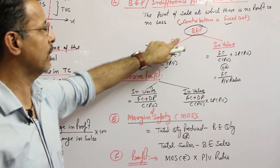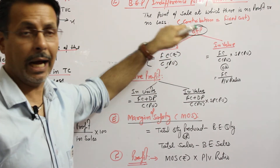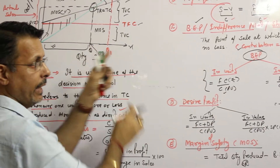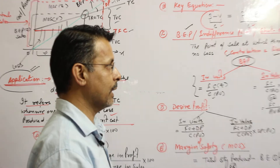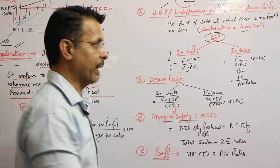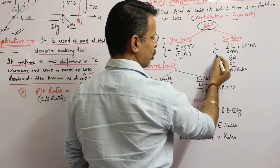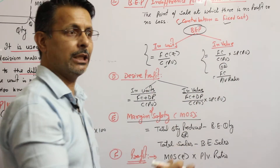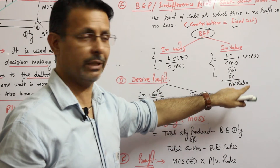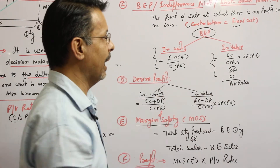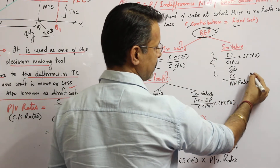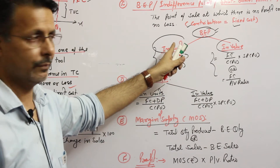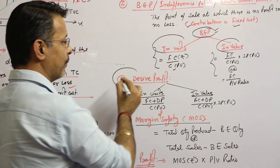That gives the number of units at break-even point. If we want the value in rupees — that is, break-even sales — the formula is: fixed cost divided by contribution per unit, multiplied by selling price per unit, or fixed cost divided by PV ratio. This gives break-even sales, while the earlier formula gives break-even quantity.